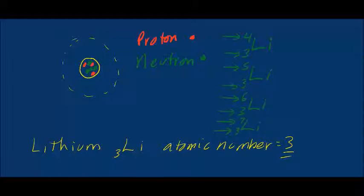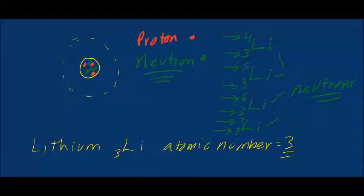Why is the mass number different? Because each has a different number of neutrons, which gives each one more mass. These are isotopes of lithium. Isotopes are atoms of the same element — in this case lithium — that have different mass numbers because they have different numbers of neutrons. That's what's important; that's what makes the difference.